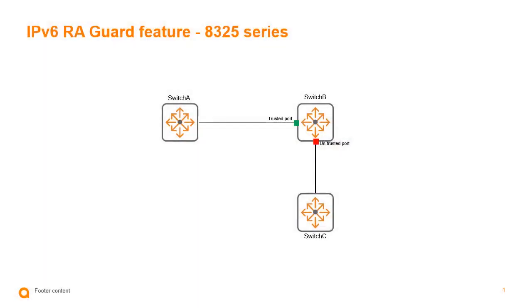What does this mean for the 8325 series when configuring IPv6 RA guard? Consider a route advertised from Switch A going to Switch B — this is a legitimate source on a trusted port, and the route is accepted on Switch B. However, the same route could be advertised by Switch C, which could be a malicious attack or misconfiguration, and could result in Switch C hijacking the route, especially if advertised with a higher route priority. If IPv6 RA guard is configured on that port as untrusted, the RA route advertisement packet and any route redirects will be dropped.